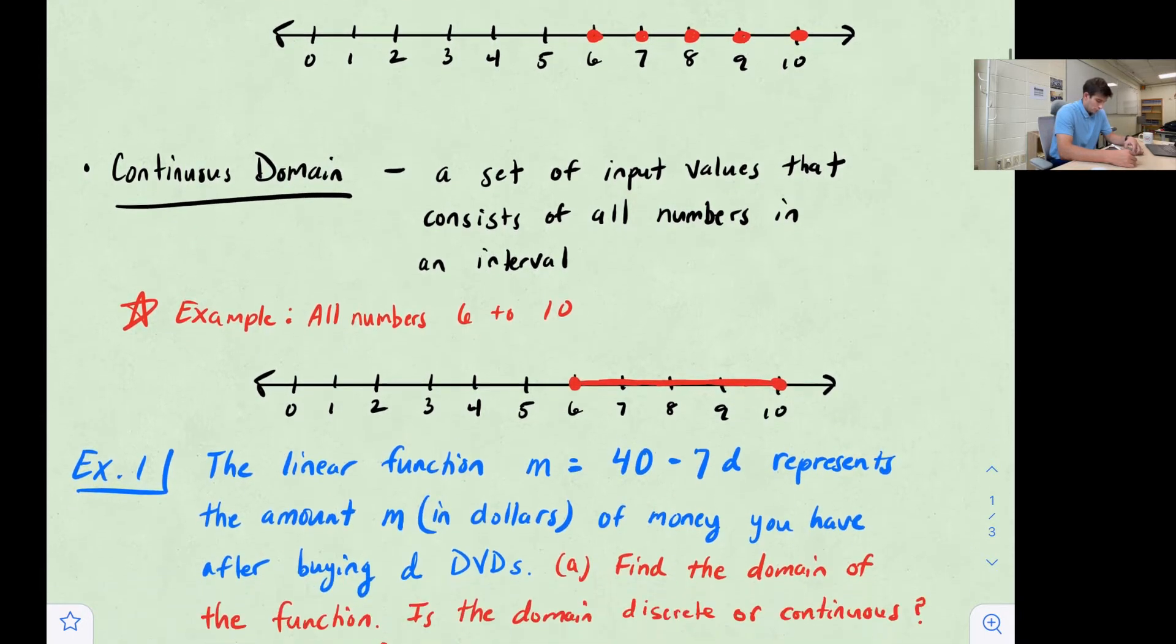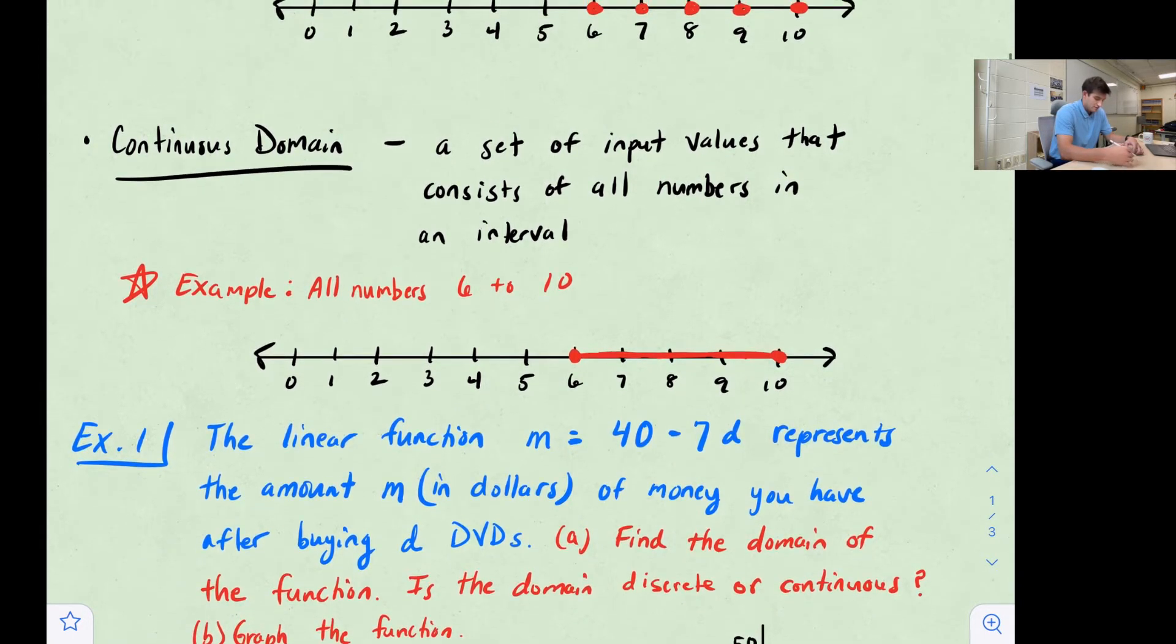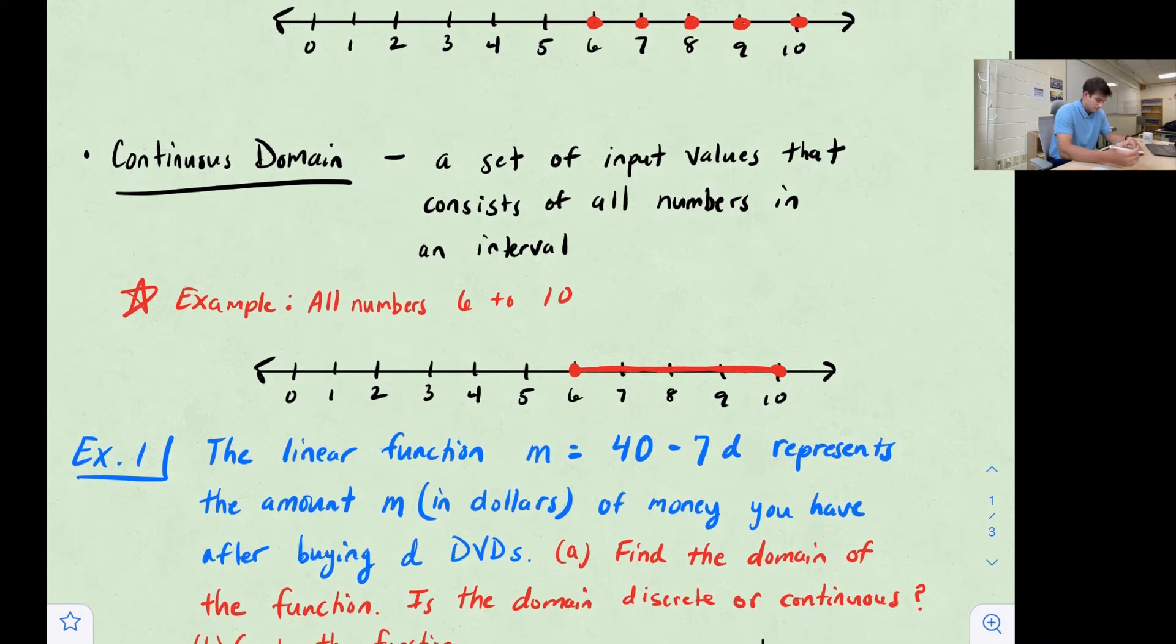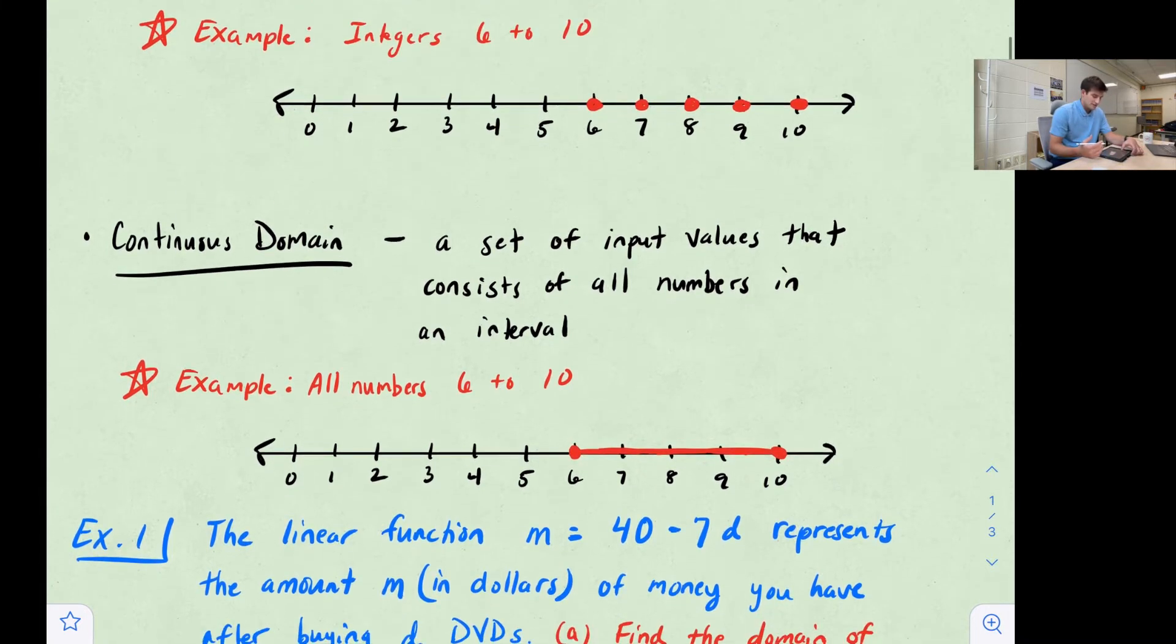For continuous domain, we have a set of input values that consists of all numbers in an interval. So we're still using numbers 6 to 10, but it's all numbers 6 to 10. So notice here we have a dot at 6, a dot at 10, but we've shaded in between there because we do include those values that are between the whole numbers.